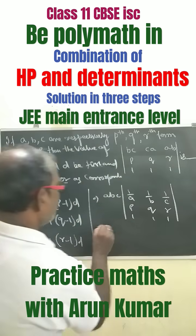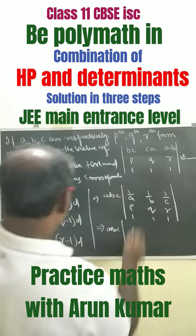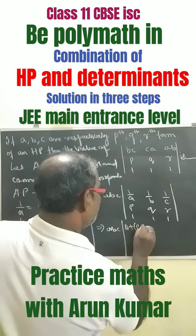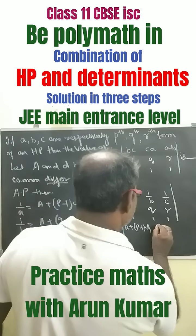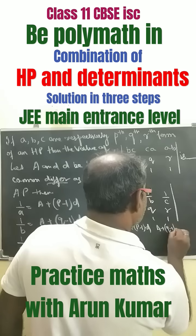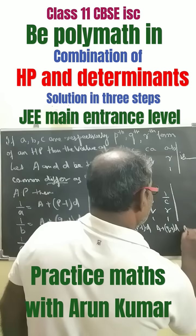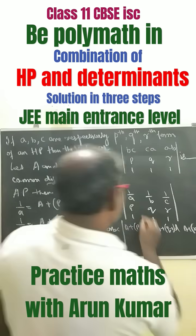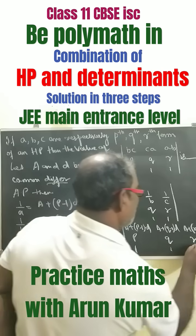Now, this can be written as A, B, C where 1/A means we can write this term as A plus (P minus 1) into D; 1/B means we can write this term as A plus (Q minus 1) into D; and 1/C can be written as A plus (R minus 1) into D. Then the rest of the terms are P, Q, R and 1, 1, 1.